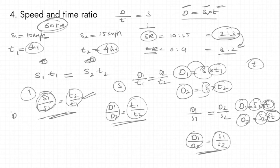Key rules: When distance is the same, speed and time are inversely related. When speed is the same, distance and time are proportional. When time is the same, distance and speed are proportional.